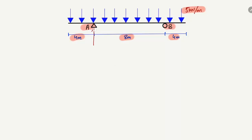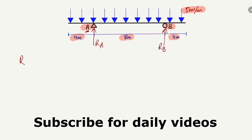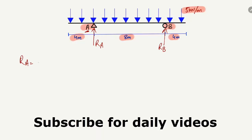Support A is a hinge support, so it can take vertical load RA and also a horizontal load. Support B is a roller support, so it takes only vertical load RB. Since there is no horizontal load acting on the beam, the horizontal component of the hinge support is equal to zero. Therefore, we only need to find RA and RB.